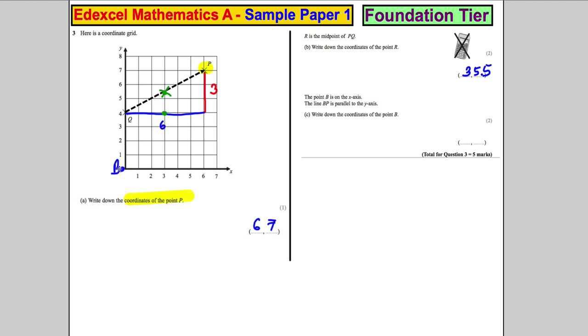Think about it. B is somewhere along here. It's not there. It must be there, because this line then, BP, would be parallel to that line. So the coordinates of B, just by inspection there, must be six across and zero up. So six and zero, and we're done.